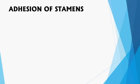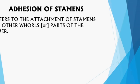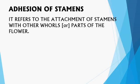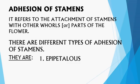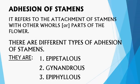The next variation is adhesion of stamens. Adhesion means attachment — this variation refers to the attachment of stamens with other whorls or parts of the flower. There are different types of adhesion of stamens: epipetalous, gynandrous, and epiphyllous.